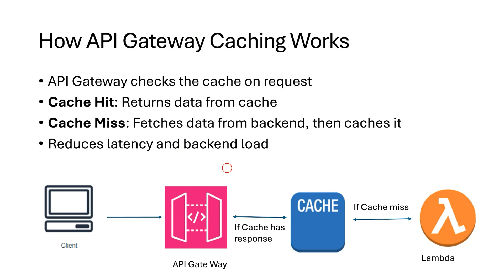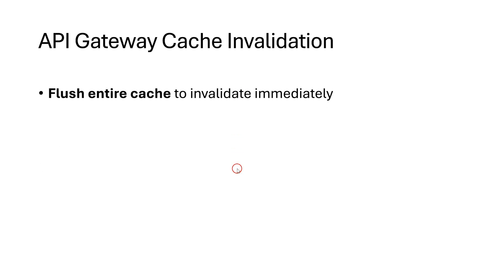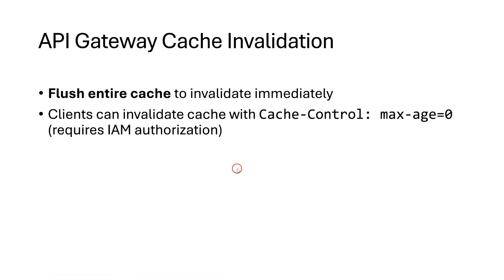Now moving on to cache invalidation — a critical aspect of caching. API Gateway allows you to flush the entire cache at any time, effectively invalidating all stored data immediately. Additionally, clients can also invalidate the cache by sending a request with a header containing the key cache-control with max-age=0, which will invalidate all the cache from the client side.